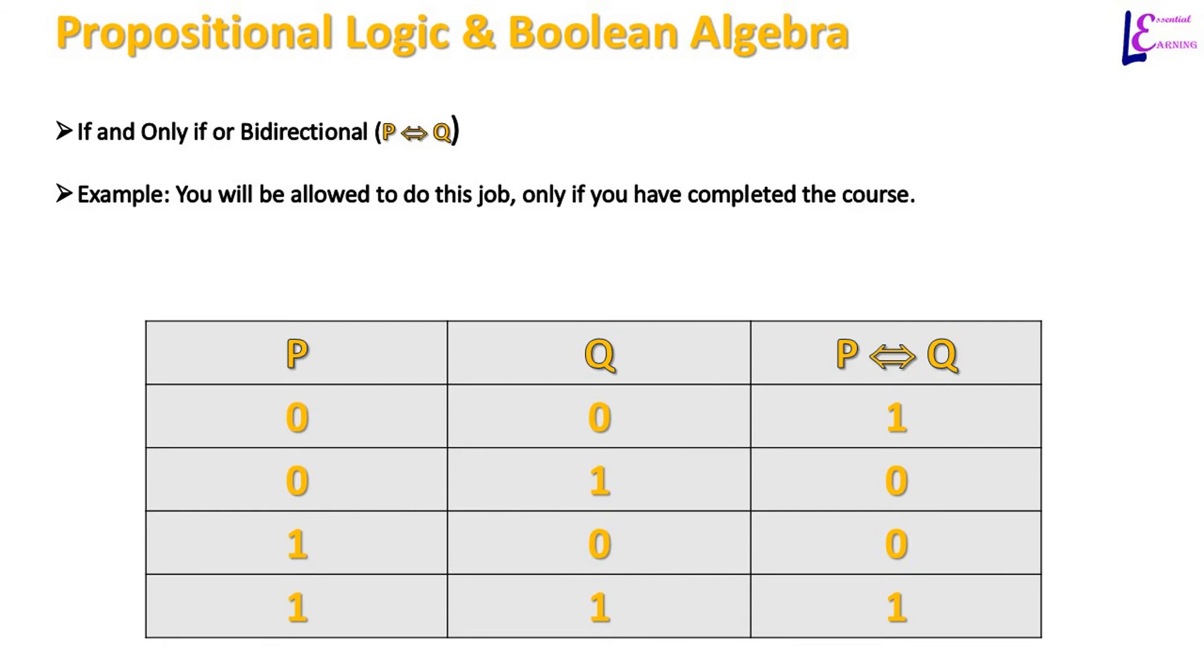Bi-directional implication or if and only if proposition is true if both of the statements are either false or true. For example, consider the statement: You will be allowed to do this job only if you have completed the course. Truth table elaborates this concept.